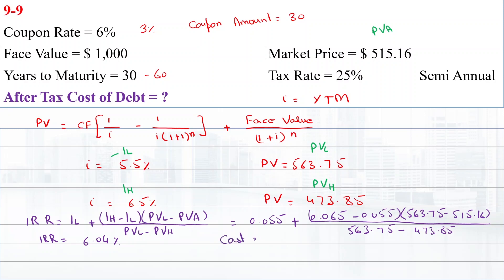The cost of debt is 6.04% times 2, which equals 12.08%.